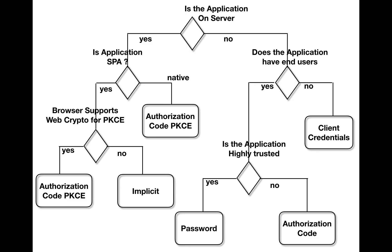Now we have a more complete picture. If the application is on the edge — on the user's machine — is it a single page application or native? If it's native, we have a modified version of authorization code called authorization code with PKCE, which works much safer than implicit and without the necessity for a client secret. So if you take regular authorization code it needs a client secret, whereas authorization code with PKCE works without a client secret and still validates the application.